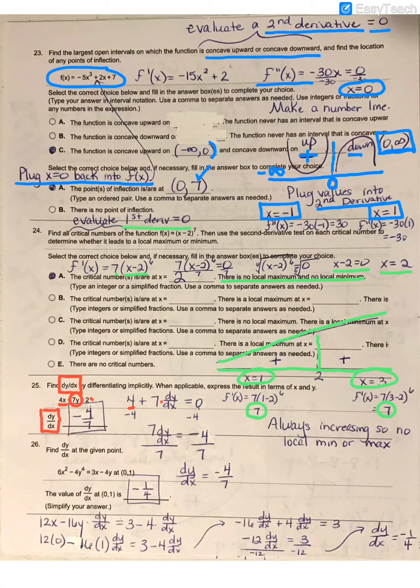They're asking us to find what dy/dx equals. So algebraically, you're just solving. I subtracted 4 on both sides, then divided by 7. So I found that my dy/dx is negative 4 over 7.